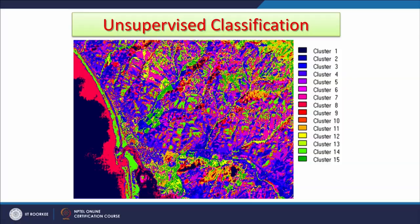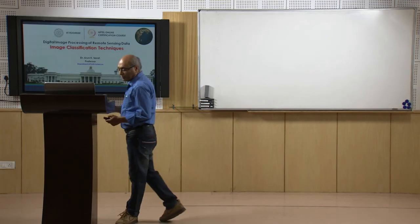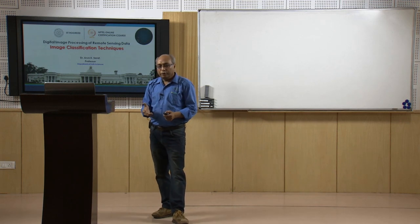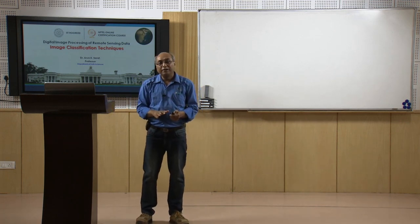In an unsupervised classification example, the same image is initially clustered into 15 classes with different colors assigned. Using known ground knowledge — for example, identifying cluster 7 as turbid water and cluster 2 as clear water, and cluster 14 as sand/beach — the analyst assigns meaningful land cover labels to each spectral class. This type of classification is much quicker to perform. Both supervised and unsupervised options are available, each with further sub-options.